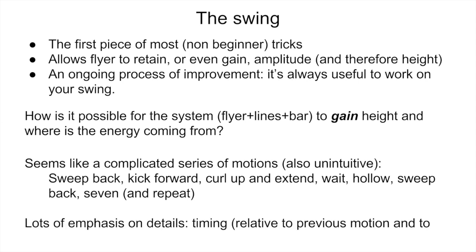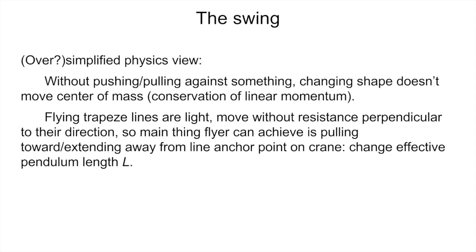When you're learning this, there's a lot of emphasis on details — the timing relative to previous motion and to the phase in the swing, the strength of those motions, and the angles you reach at various points. To understand this from a physics point of view, I'm going to take a simplified — and arguably oversimplified — point of view. It comes from the realization that without pushing or pulling against something in a fixed reference frame, changing shape doesn't move your center of mass, which is essentially the conservation of linear momentum. Because the flying trapeze lines are light, they move without resistance perpendicular to the direction they're extended, so the main thing the flyer can achieve is pulling toward or extending away from the line anchor point on the crane — that is to say, they can change their effective pendulum length L.